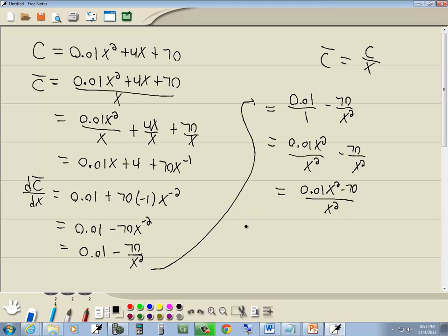Now we want to set our top part equal to 0 and bottom part equal to 0. So we've got 0.01x squared minus 70 equal to 0, and we've got x squared equals 0. Now the x squared equals 0 - if we drop the squared we'd have x equals 0, and that doesn't make any sense. We don't want any 0 values for x, we don't want any negative values for x.